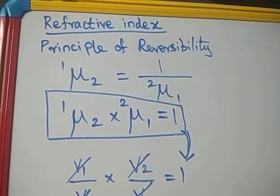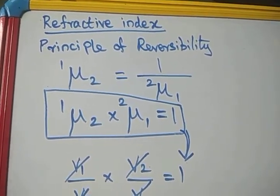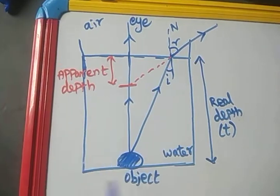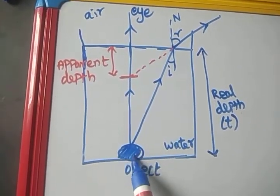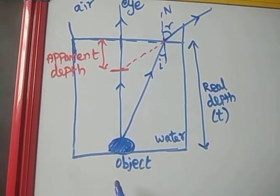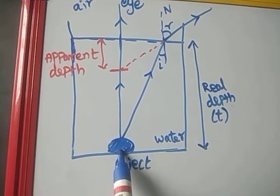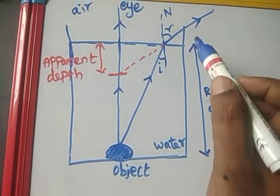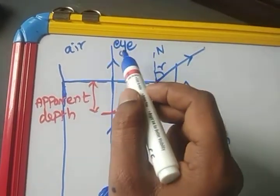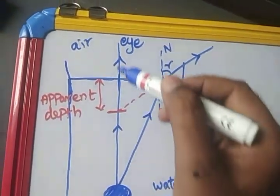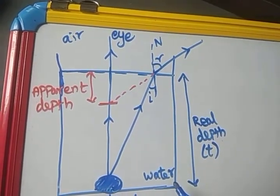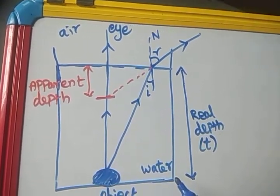Now let us see what happens when light falls on a beaker containing water. This is a beaker containing water. The object — say a coin — is placed inside the water and touches the bottom of the beaker. This is the real depth of the object. When viewed along the normal, there is no refraction — the light travels without deviation, because whenever the angle of incidence is 0, the angle of refraction is also 0. That is the no-deviation condition.